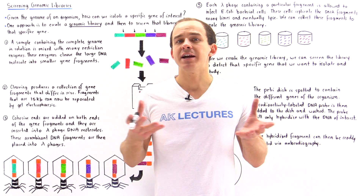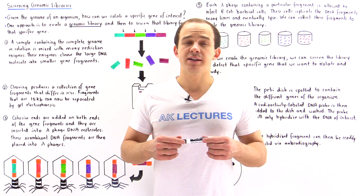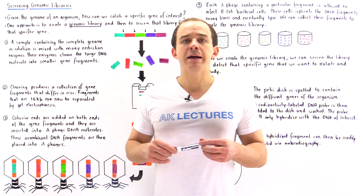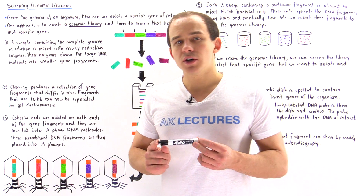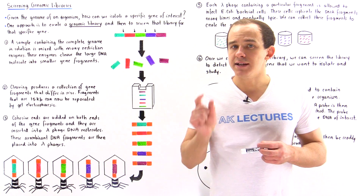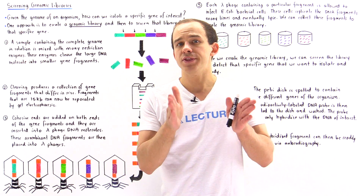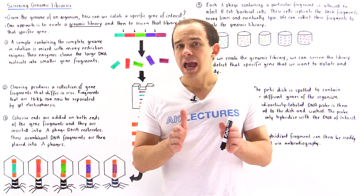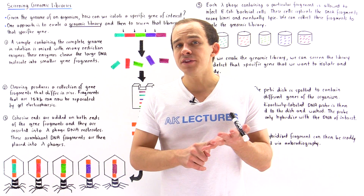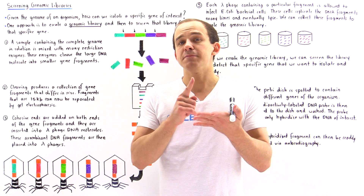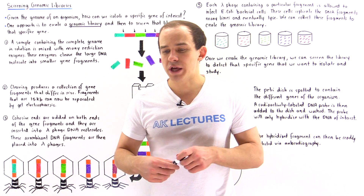Let's suppose that we have the entire genome of some organism — the entire DNA molecule that contains all the different types of genes found within that organism. If we want to isolate and study a specific type of gene, a single gene within that particular genome, how exactly can we go about doing that? How can we find that gene, isolate it, and then make many copies so that we can actually study and experiment with it?